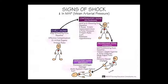Third last stage hai jo ki irreversible hoti hai jo ko theek nahi kiya ja sakta. Yeh shock ke signs bataaye gaye hain jis mein mean arterial pressure jo hai wo kum ho jata hai. Early sign mein MAP jo hai wo 10 mmHg se bhi kum ho jata hai baseline se. Effective compensation isme hota hai, oxygen vital organs tak pahuncha di jaati hai. Second jo stage hai usmein compensatory signs dikhai denge.